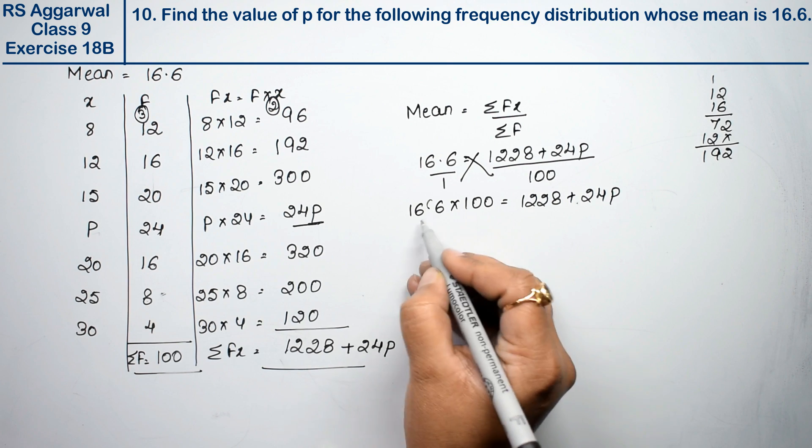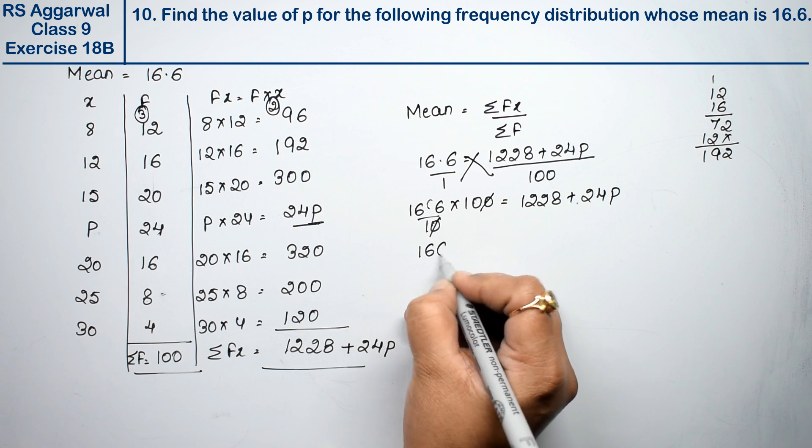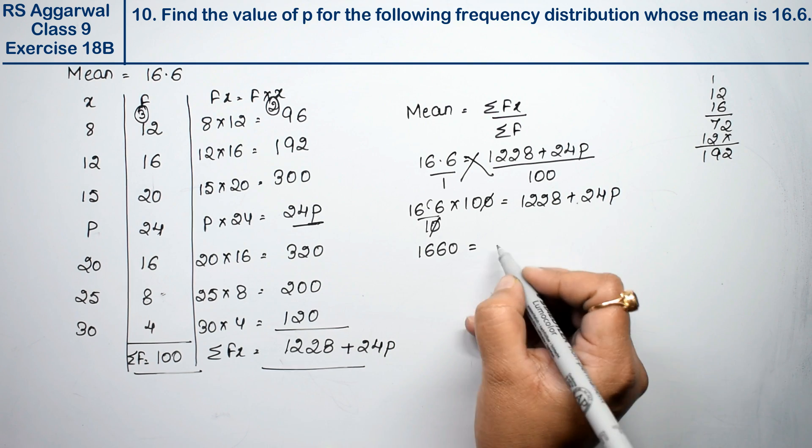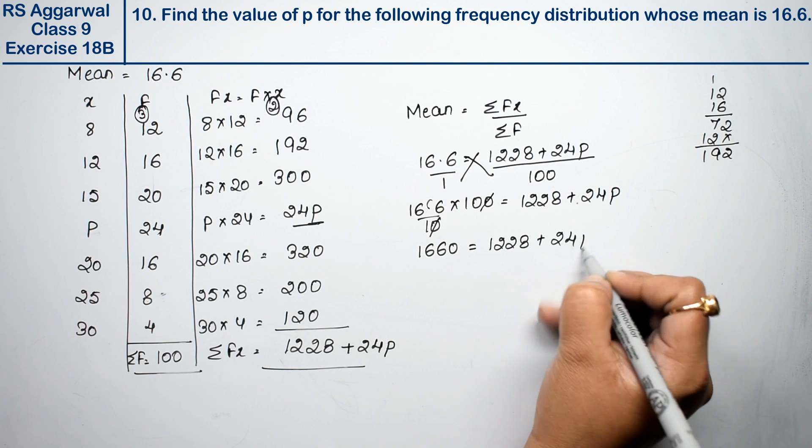16.6 times 100: moving the decimal point one place gives us 166.0, or 1660. So 1660 equals 1228 plus 24p.